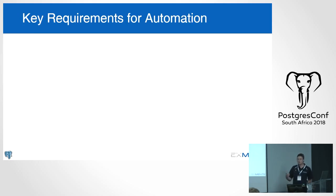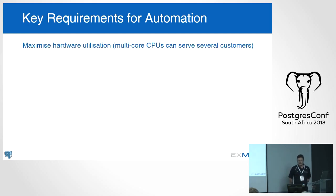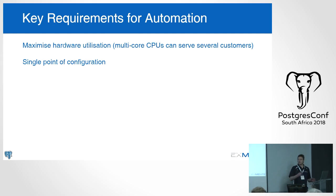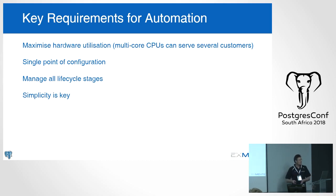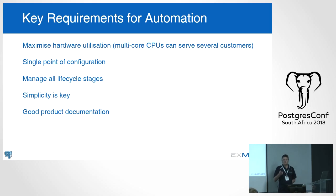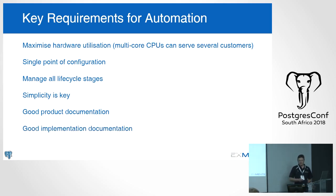After dealing with Fabric, our key requirements for automation were: maximize hardware utilization by running multiple applications and customers on one piece of hardware. Our simulations are single-core but CPU-heavy, so we can service multiple clients in parallel on a multi-core CPU. We wanted a single point of configuration — which Ansible largely took care of — and the ability to manage all lifecycle stages: provisioning, deployment, maintenance, and migrations. We also needed good product and script documentation so you can still read a script three months after writing it.